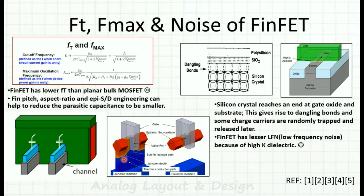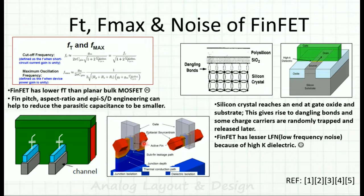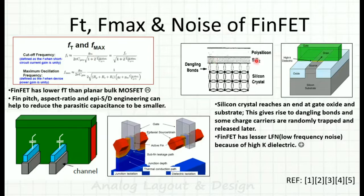One way to recover FT and Fmax is to grow an epitaxial layer on the source and drain of the FinFET. The epitaxial source and drain grown over the fin reduce the overlap capacitance, thereby increasing FT and Fmax.